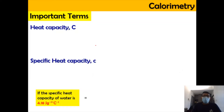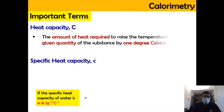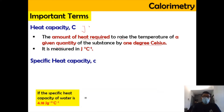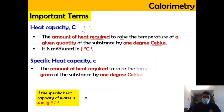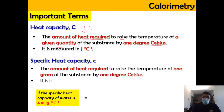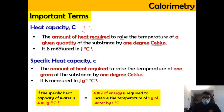There are some important terms we need to know. Heat capacity is the amount of heat required to raise the temperature of a given quantity by 1 degree Celsius, measured in units of Joule per degree Celsius. Specific heat capacity is the amount of heat required to raise the temperature of 1 gram of a substance by 1 degree Celsius. For example, if the specific heat capacity of water is 4.18 J/g·°C, it means we need 4.18 Joules to increase the temperature of 1 gram of water by 1 degree Celsius.